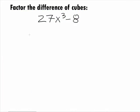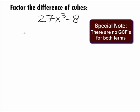In this example, we want to factor the binomial 27x cubed minus 8. Note that this binomial does not have a greatest common factor for all of its terms.